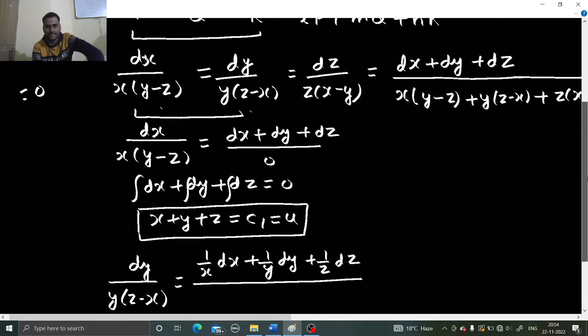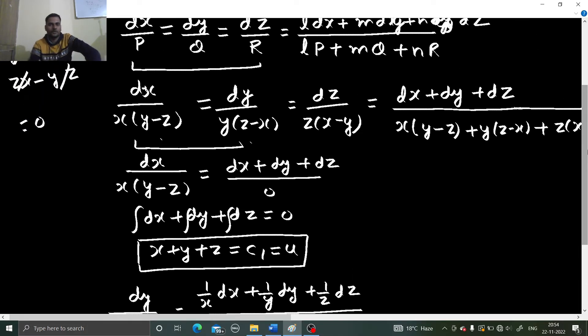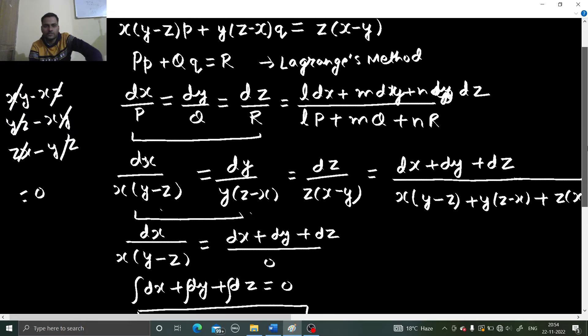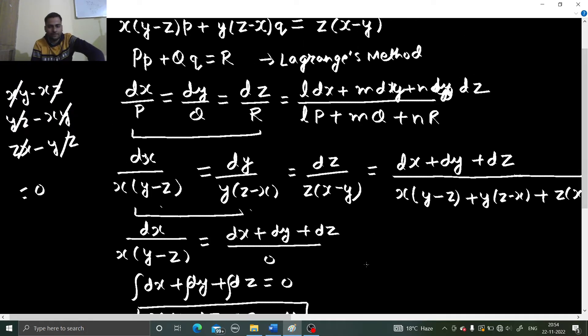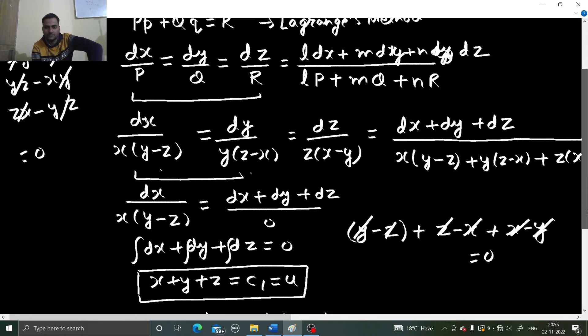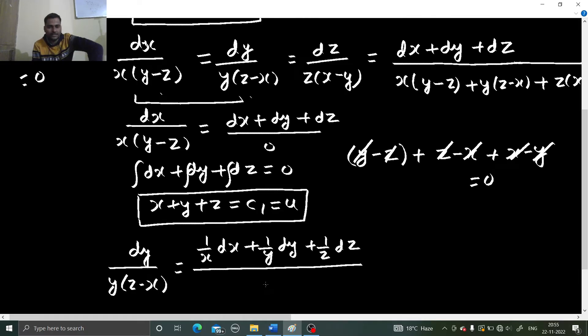And as you can see, if I multiply them with 1/x, this will become y-z because x by x is 1. Plus z-x will be there, y by y will get cancelled, and x-y. So as you can see, y and y gone, x and x gone, z and z gone. So this is giving you 0. So divided by 0.